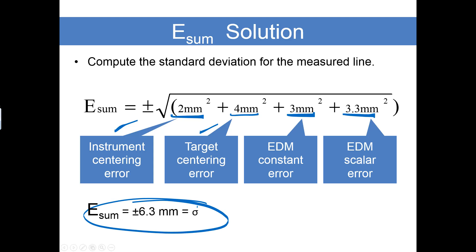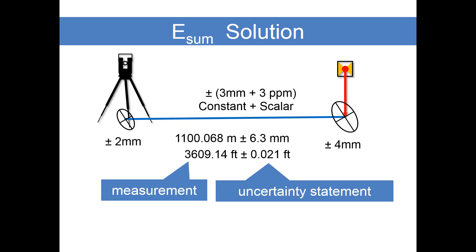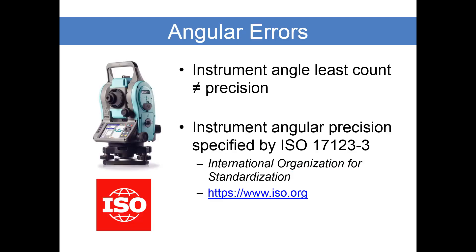That is the standard deviation in our measured line. When we describe this line, we remember it has two components: the measurement itself and the uncertainty statement. We are expressing our uncertainty statement as a standard deviation that has a 68.3% confidence.